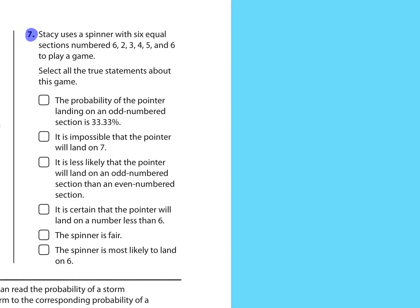Number 7, Stacy uses a spinner with 6 equal sections numbered 6, 2, 3, 4, 5, and 6 to play a game. Select all true statements. The first says the probability of landing on an odd numbered section is 33.3 repeating percent.